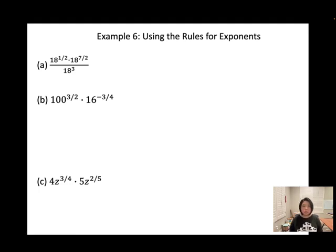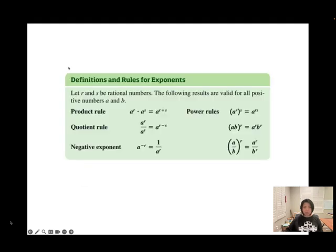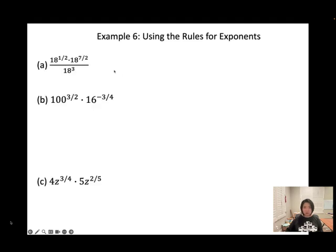Example 6a: 18 to the power of 1 half, times 18 to the power of 7 over 2, divided by 18 to the power of 3. All have the same base, so apply the product and quotient rules. Here R and S are rational numbers: 1 half, 7 over 2, and 3 over 1. Add the first two exponents: 1 half plus 7 over 2 equals 8 over 2, which equals 4. Then apply the quotient rule and subtract.